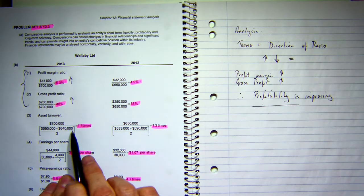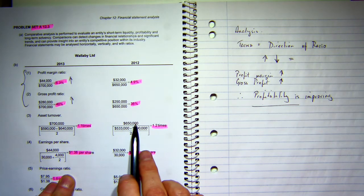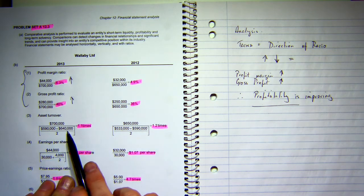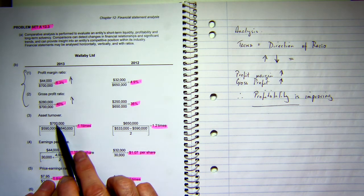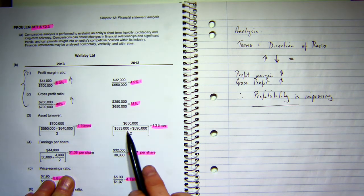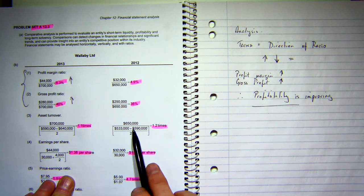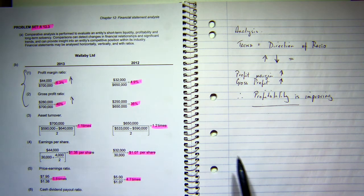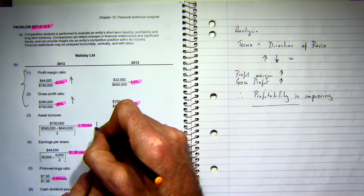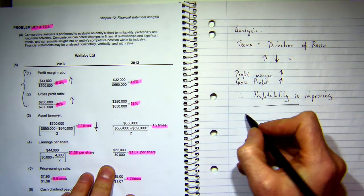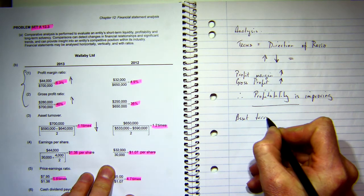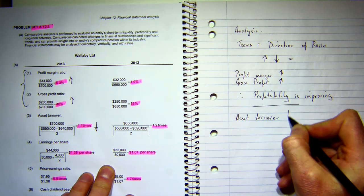The next one is my asset turnover. My assets have increased from 533 to 640 over a period of time, and asset turnover decreased. So asset turnover is decreased.